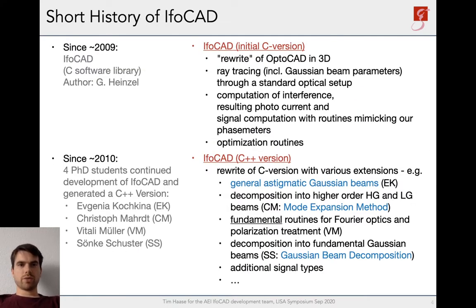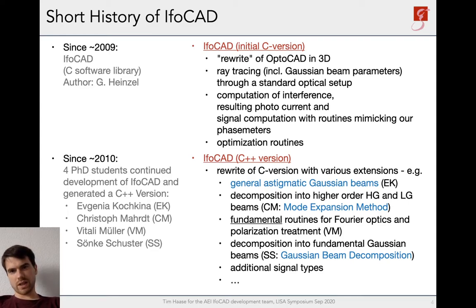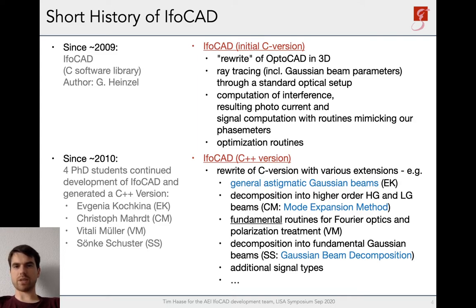Let me give you a short history of IFOCUT. The project was started in 2009 by Gerhard Heinzel, initially in C as the successor of OptoCUT, which was also an AEI software but was restricted to 2D optical setups. IFOCUT enabled 3D optical setups. The initial version already contained ray tracing with fundamental Gaussian beams, the computation of the interference signal, and the extraction of the aforementioned signals, mimicking the actual phase meters used in LISA Pathfinder and LISA. Gerhard also implemented some optimization routines.